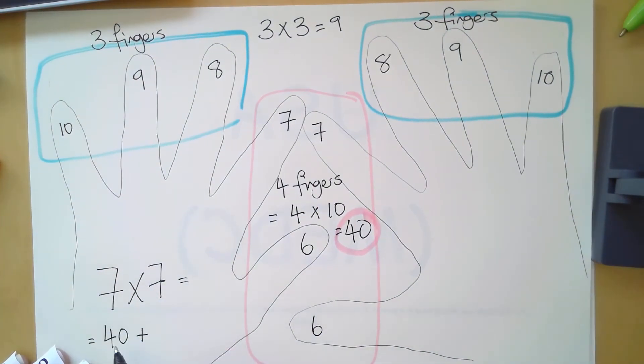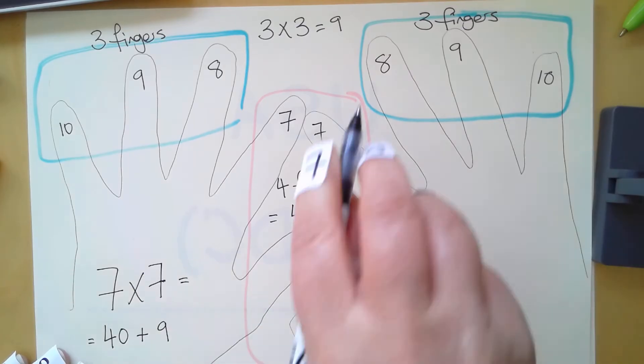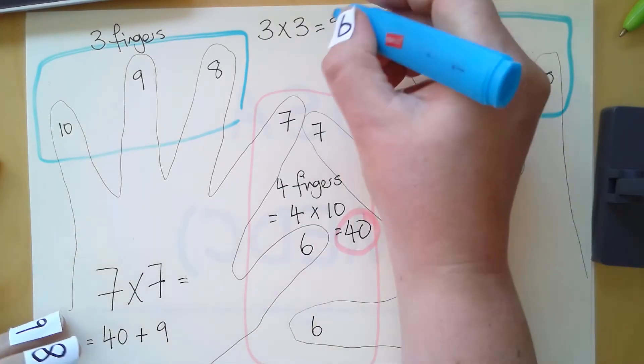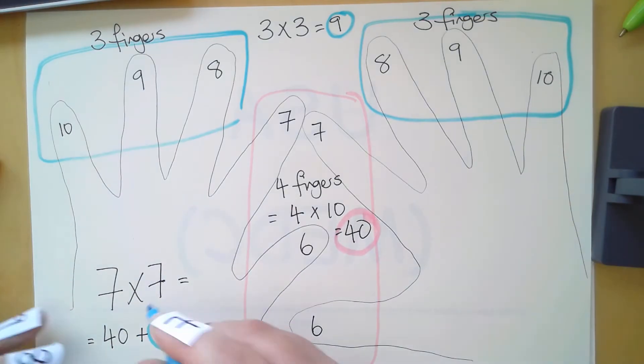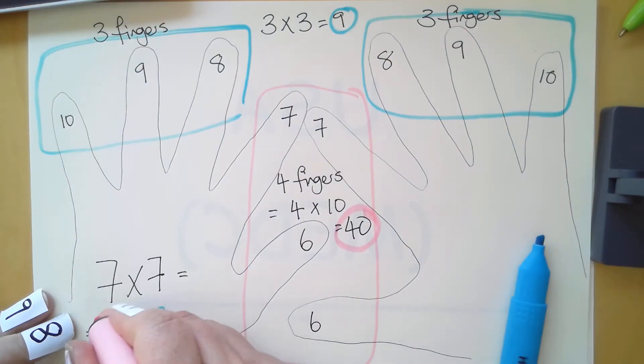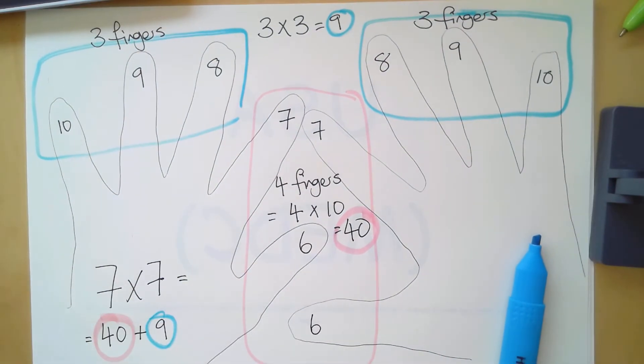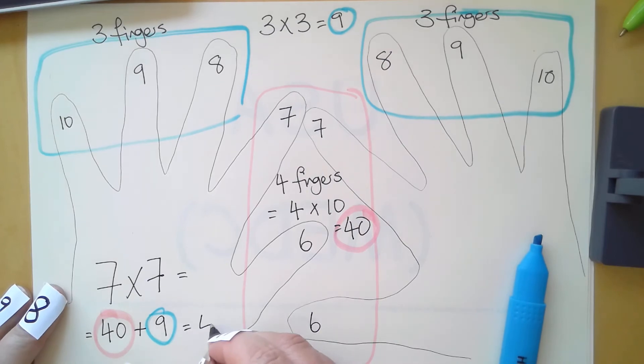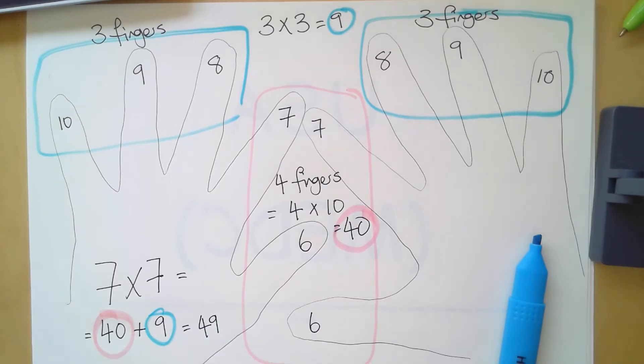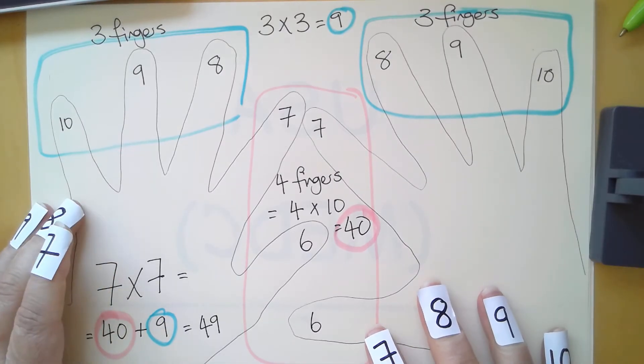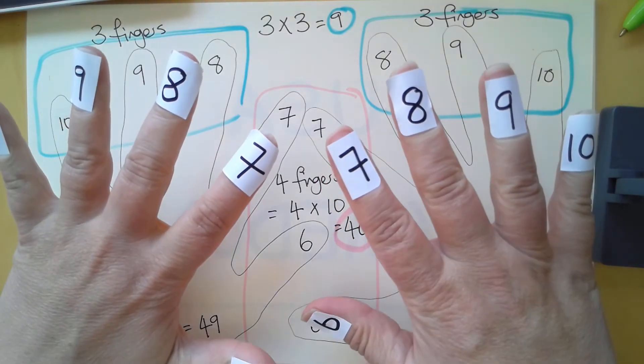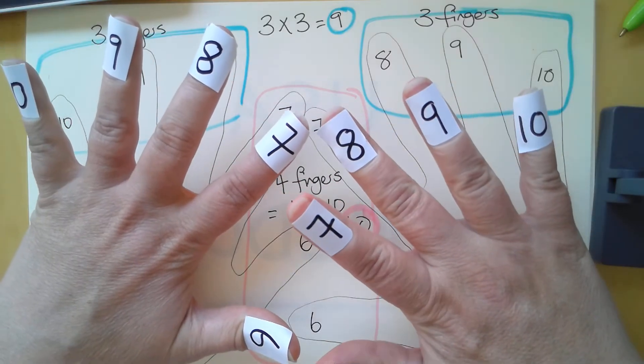Then we come down to our original equation. Seven times seven is forty plus the nine. And forty plus nine equals forty-nine. Well, you might tell me that you already know that seven times seven is forty-nine. The one that I always struggle with is seven times eight.